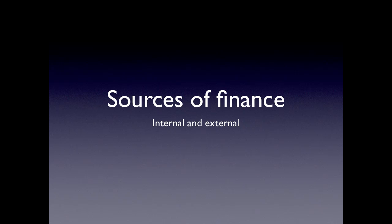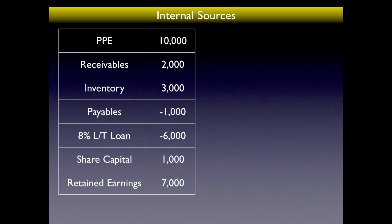We're looking at sources of finance — where we can get money from both internally and externally. Here we have a balance sheet, a statement of financial position in the old UK format, with non-current assets (PP&E) at the top, then current assets and current liabilities (receivables, inventory, and payables), then long-term liabilities, and finally equity: share capital and retained earnings.